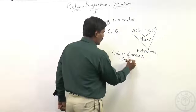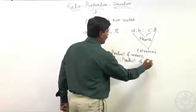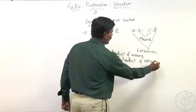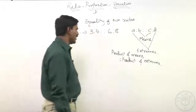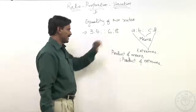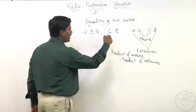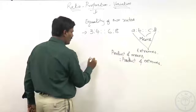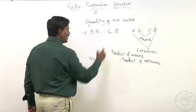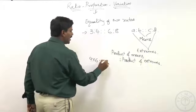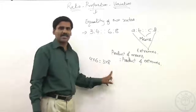To understand how product of means equals product of extremes, we need to go back to our ratio example. If you are observing carefully, yes it will definitely hold true here. The means are 4 and 6, so product of means will be 4 into 6 = 24, and product of extremes, 3 and 8, is again 3 into 8 = 24. So product of means is equal to product of extremes.